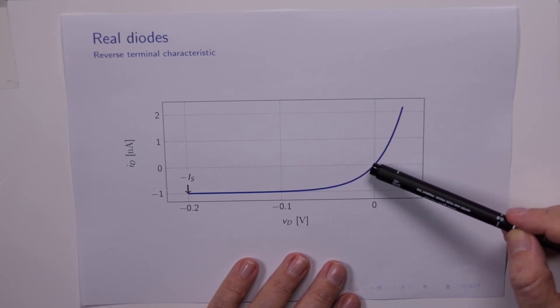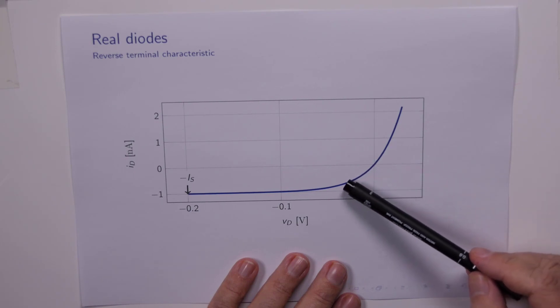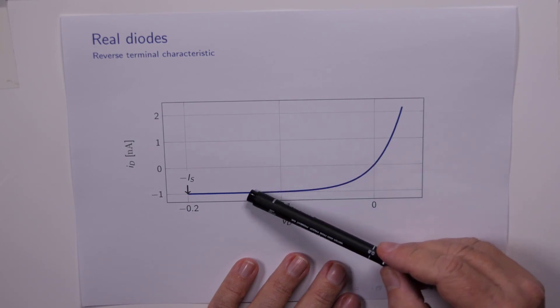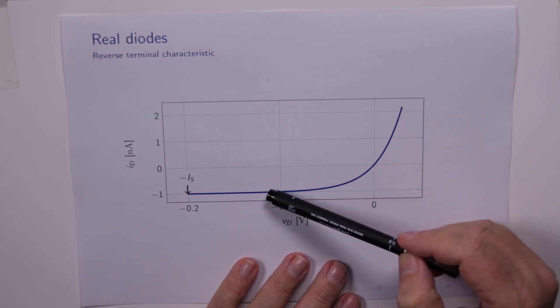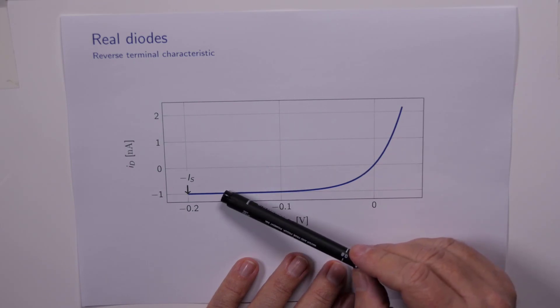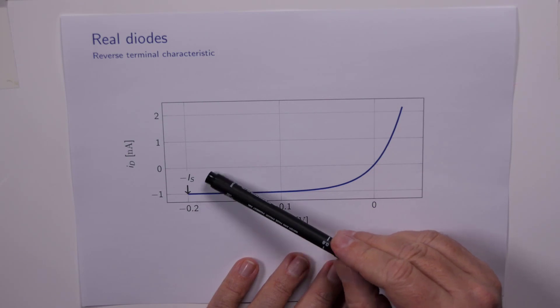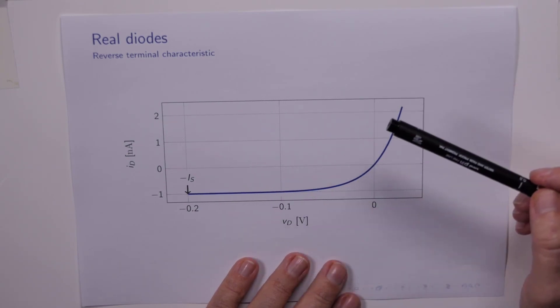In the reverse direction, instead of the characteristic hugging the line ID equals 0, it seems that there is a current that's flowing in the reverse direction, from the cathode to the anode. And it seems to saturate at this value here, and this is in fact called the reverse saturation current. It's small, in the order of 1 nanoamp for this device, but it's not zero.